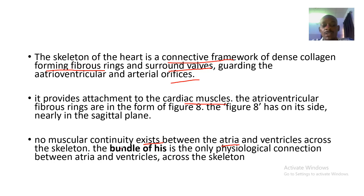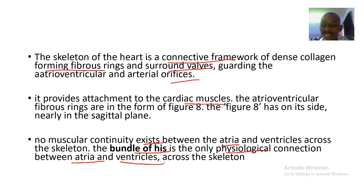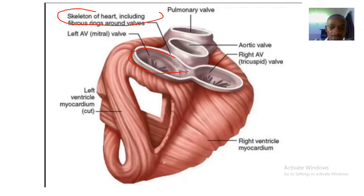No muscular continuity exists between the atria and the ventricles across the skeleton. The bundle of His is the only physiological connection between the atria and the ventricles across the skeleton of the heart.